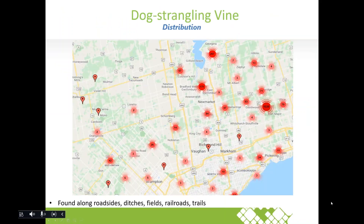This is the distribution of dog strangling vine in York Region from citizen reports. It's typically found along roadsides, ditches, fields, railroads, and trails. It spreads primarily by humans, but seeds can also spread by wind.